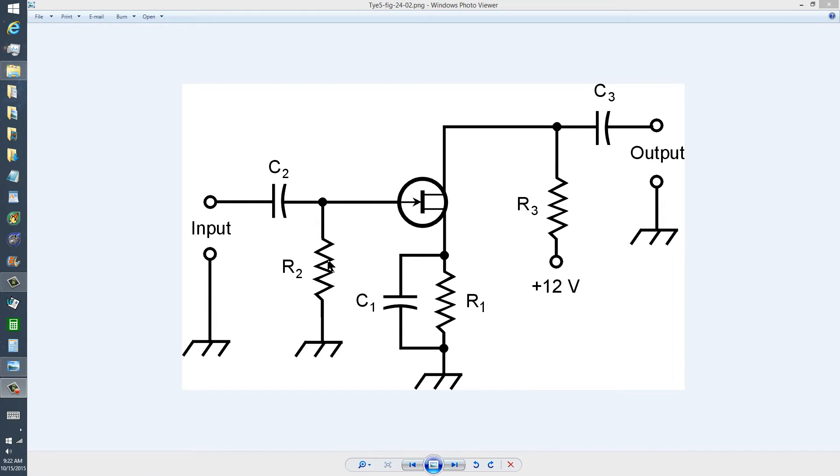This provides the proper bias for Class A operation of this Gallium Arsenide device. And I say Gallium Arsenide because they're known for the minimal amount of noise that they generate internally. R1 and C1 help to stabilize the source and also assist in providing the proper bias between the gate and the source.